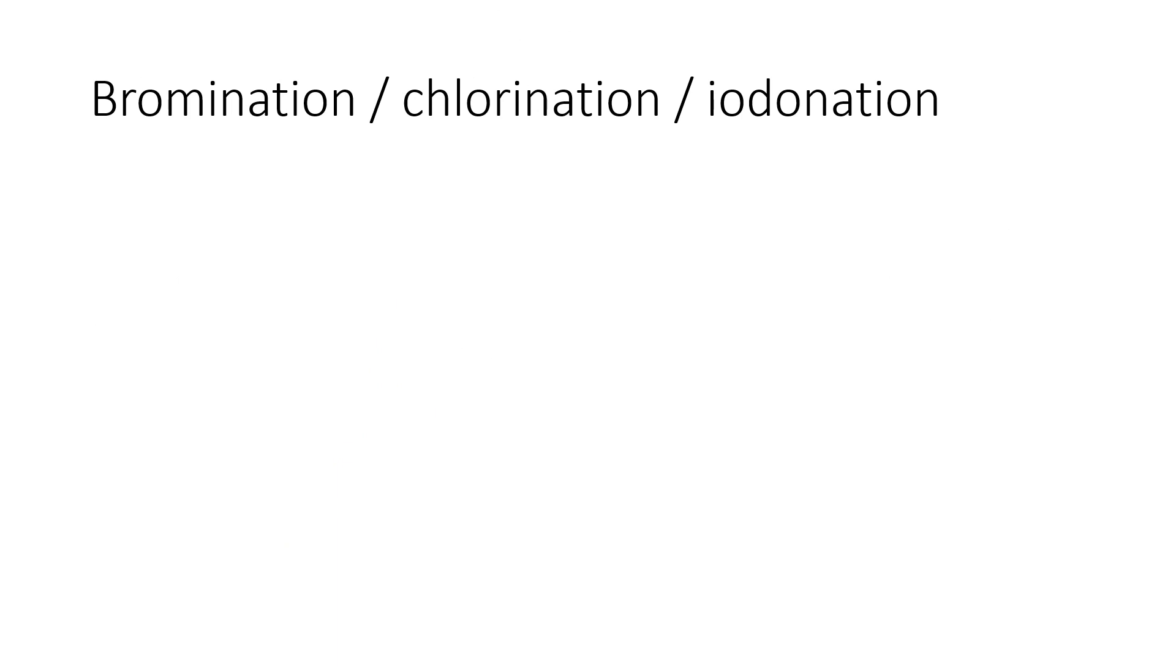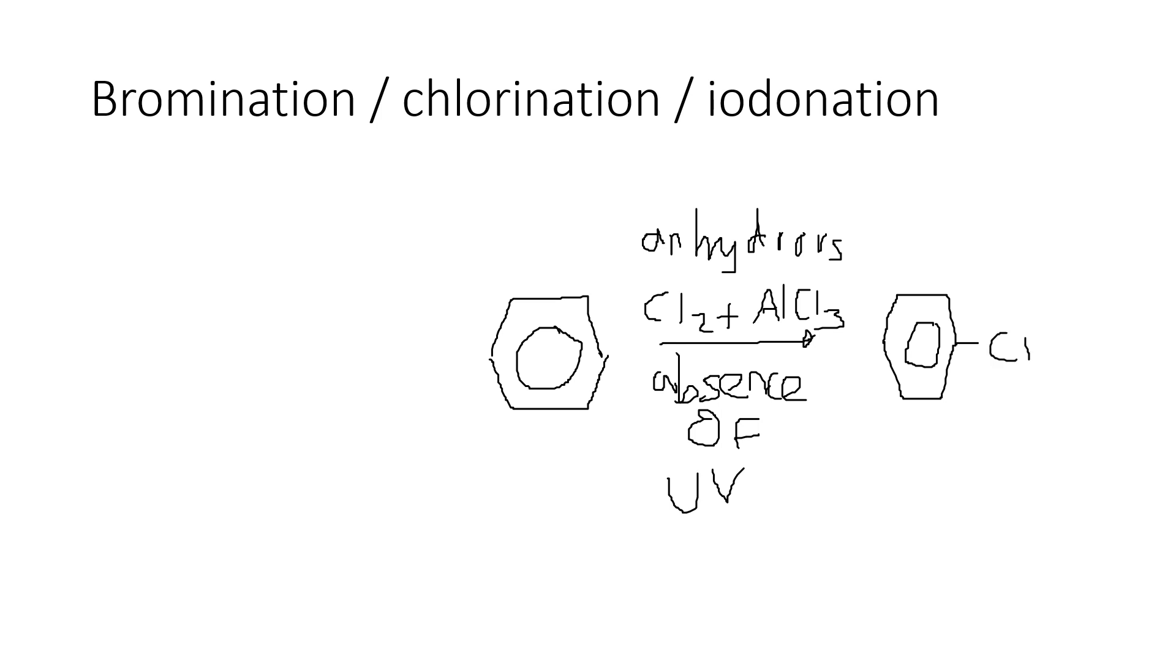Lastly then, how do we introduce halogens into our benzene ring? There are three that we need to know about. Let's take them one at a time. Firstly, chlorine and aluminum chloride will chlorinate the ring. So Cl2 and AlCl3 is the catalyst. Now a little note here on using chlorine. To avoid free radical substitution, you'd need it to be done in the absence of UV light. So in the absence of UV. And also because you're using aluminum chloride, you need to be anhydrous as well. And the product would be a benzene ring with a chlorine, which we call chlorobenzene.